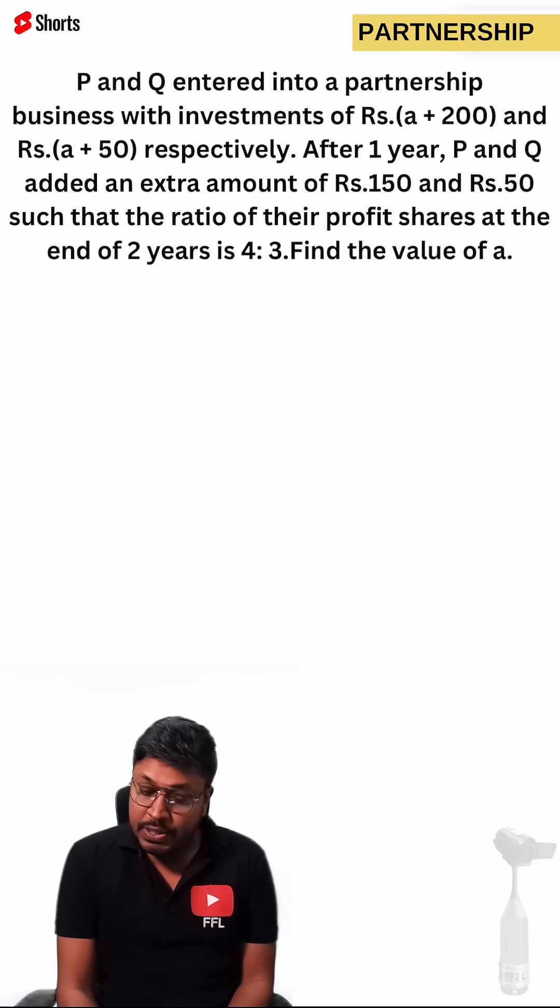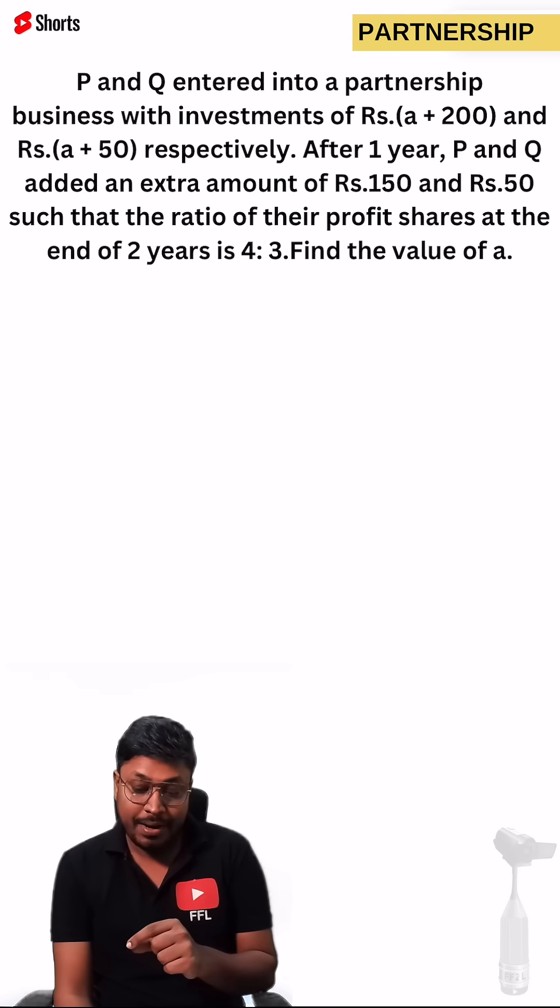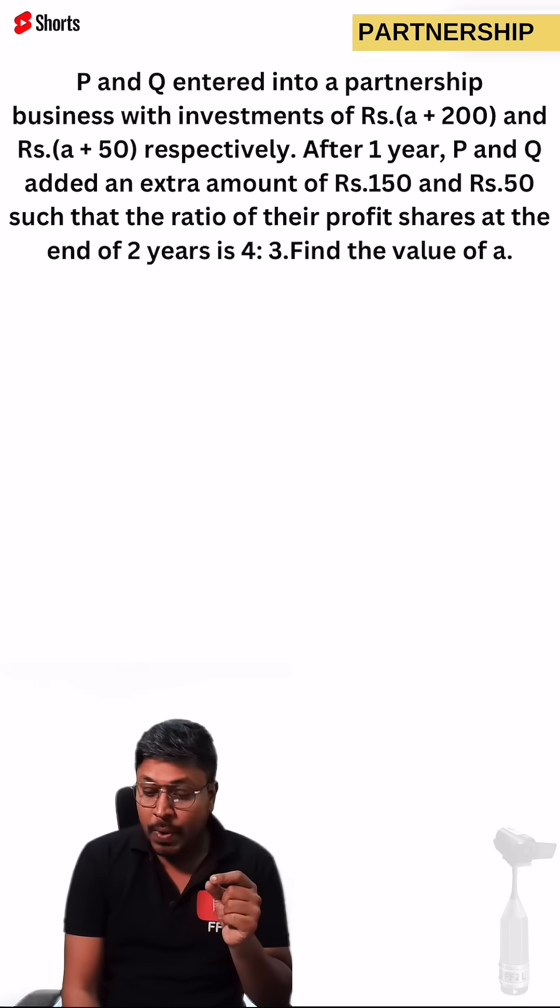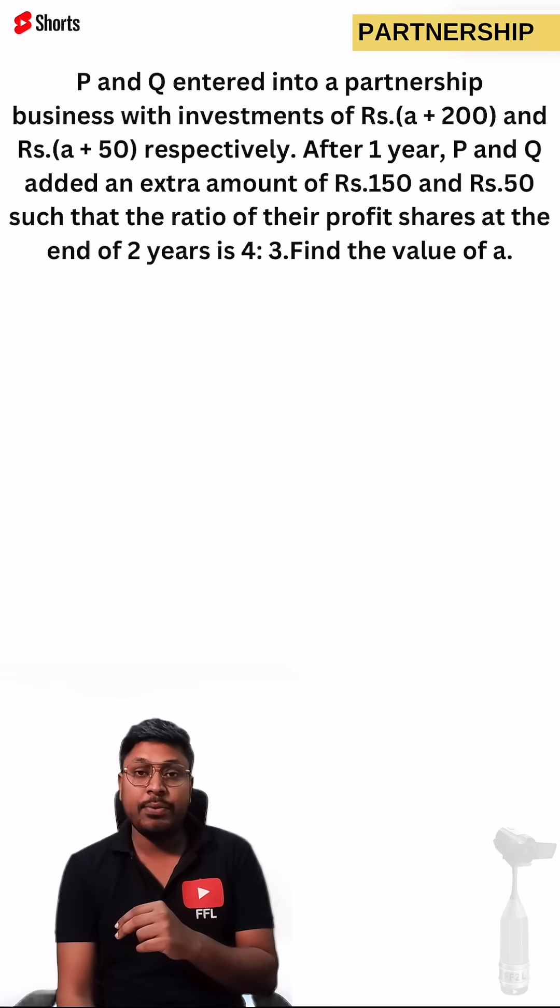P and Q enter into a partnership business with the investment of rupees A plus 200 and A plus 50. After one year, P and Q add an additional amount of 150 and 50 such that the ratio of their profit at end of two years is 4 is to 3. Find the value of A.